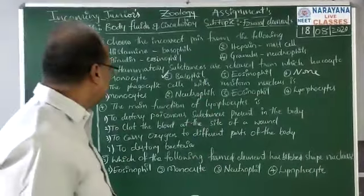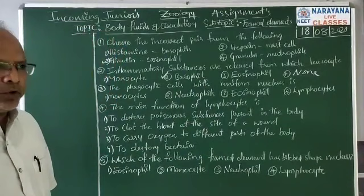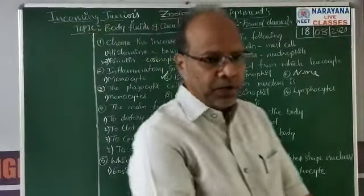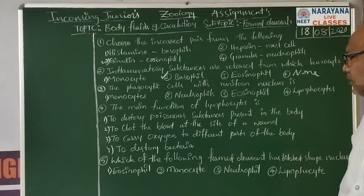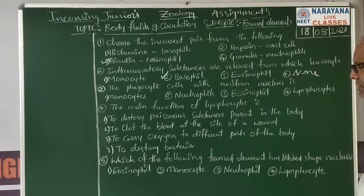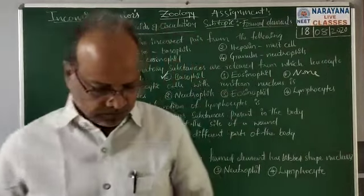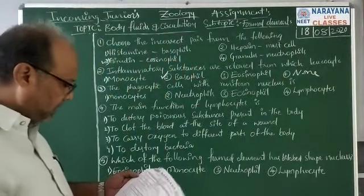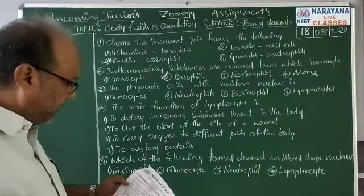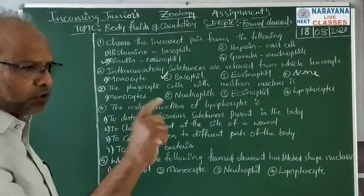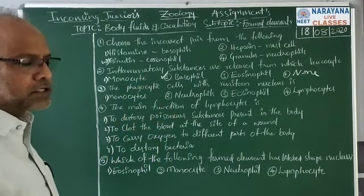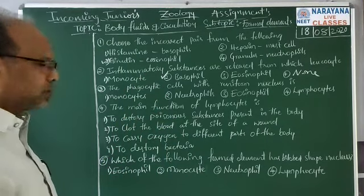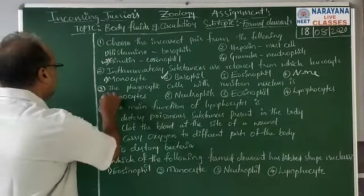Question number three: the phagocytic cells with reniform nucleus. This question is about the shape of the nucleus. The choices are: number one, monocyte; number two, neutrophils; number three, eosinophils; number four, lymphocytes. Monocytes are the phagocytic cells which show a distinct kidney-shaped nucleus, and that is why it is called a reniform-shaped nucleus. The correct answer is monocytes.